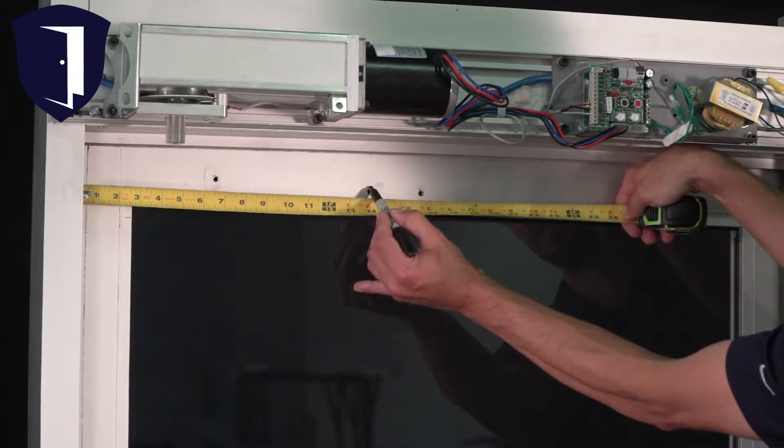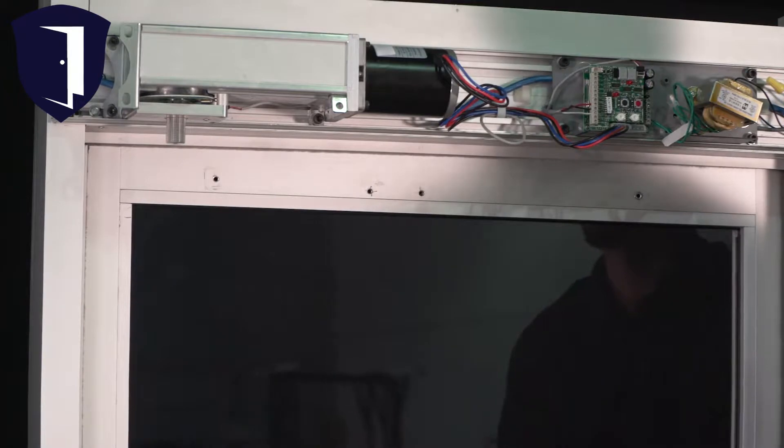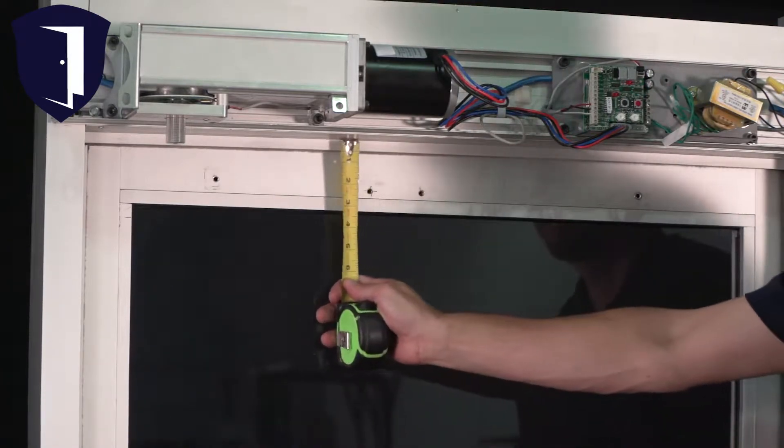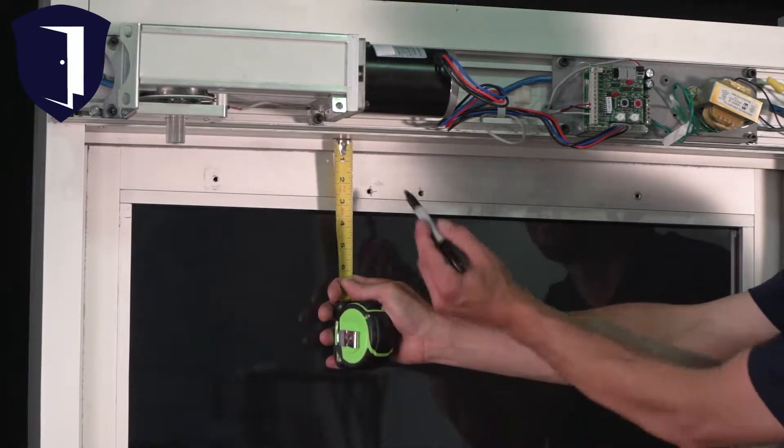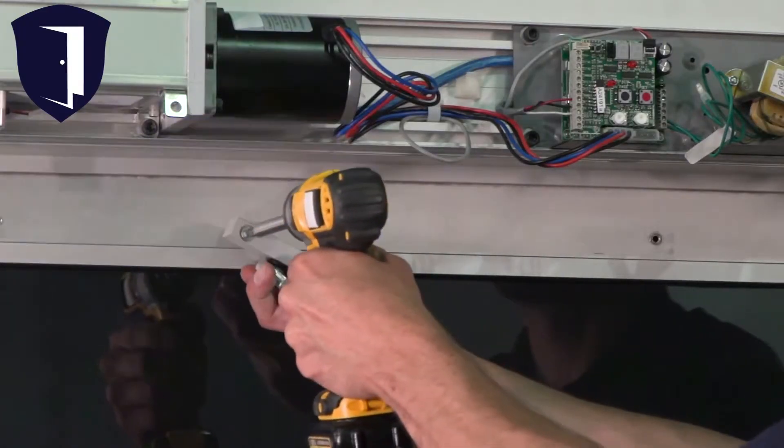To mount the push arm, begin by drilling two holes for the arm block. The first hole should be 14 inches from the hinge edge of the door and 2 1/4 inches down from the top. Screw the arm block into place.